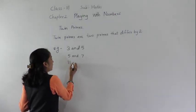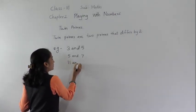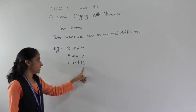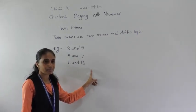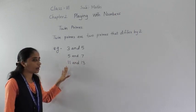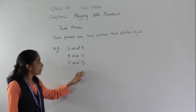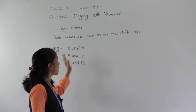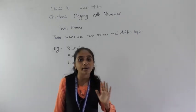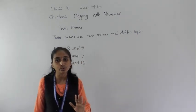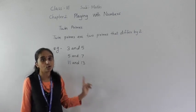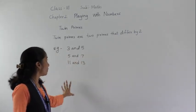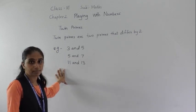Now let's see eleven and thirteen. These are also twin primes because they differ by two. So everyone understood what is meant by twin primes? Twin primes are two primes that differ by two. So these are the examples of twin prime numbers.